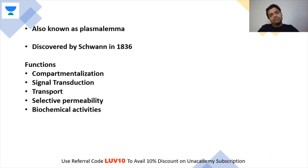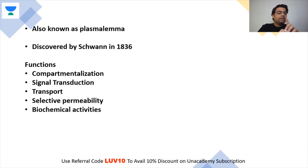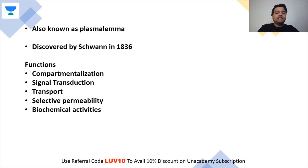Transport: if the cell has to take in water, it does so across the plasma membrane. Selective permeability is the most important feature of the plasma membrane — it is selectively permeable, meaning it allows certain things inside but not others. There are also many biochemical activities occurring in the plasma membrane.